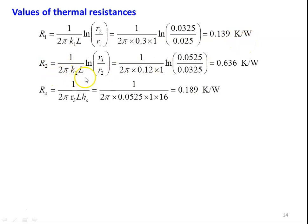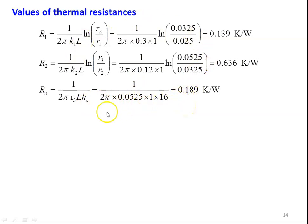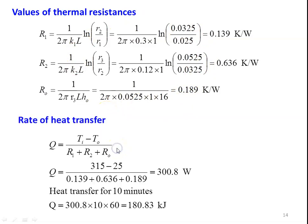Resistance R2 = ln(r3/r2)/(2πk2·L) = ln(0.0525/0.0325)/(2π·0.12·1) = 0.636 K/W. Outside air resistance Ro = 1/(2πr3·L·ho) = 1/(2π·0.0525·1·16) = 0.189 K/W. The rate of heat transfer Q = (T1 - T_air)/(R1 + R2 + Ro) = (350 - 25)/(0.139 + 0.636 + 0.189) = 300.8 W. For 10 minutes: Q_total = 300.8 × 10 × 60 = 180.83 kJ.